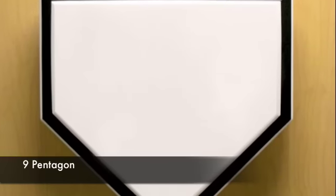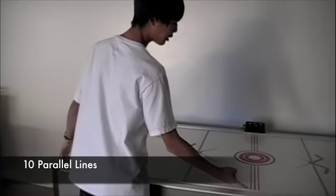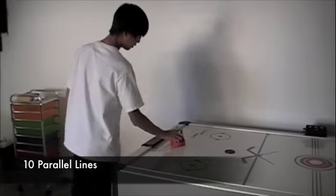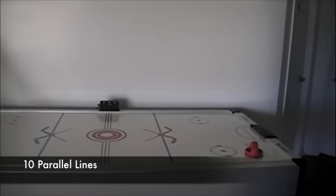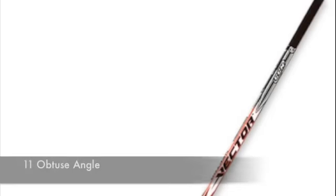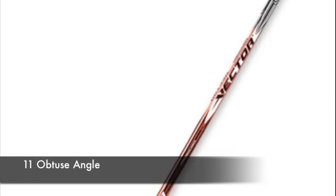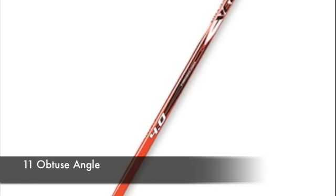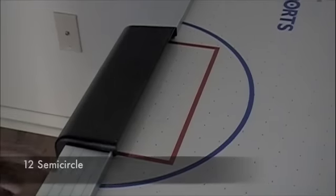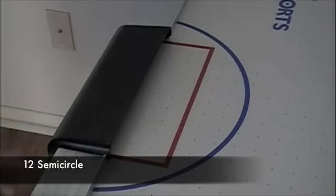The home plate in baseball is shaped like a pentagon. The lines on the hockey table are parallel lines. This hockey stick forms an obtuse angle at the bottom. The goal of the hockey table is a semicircle.